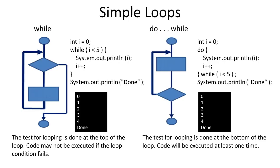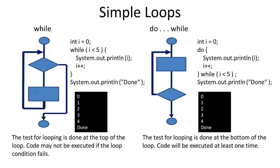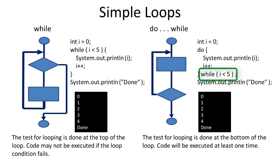Here are the flowcharts for the while and do-while loops. The results for either loop are the same — they each display the numbers 0 through 4. When the loop ends, a print line statement shows 'done'. The test condition for the while loop is at the top of the loop, but the test condition for the do-while loop is at the bottom. As we will see, there will be times when this can make a big difference.